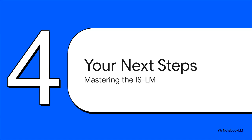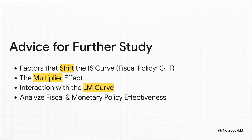Getting the IS curve is a massive step. But in the world of macroeconomics, it's really only half of the story. It's part of a very famous duo called the IS-LM model. Your next move should be to figure out what makes the entire IS curve shift — we're talking about big things like government spending or tax changes. You'll also want to dive deeper into the multiplier effect, and of course meet the IS curve's partner, the LM curve. When you put those two together, you basically unlock the whole toolkit for analyzing government economic policies.